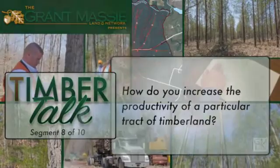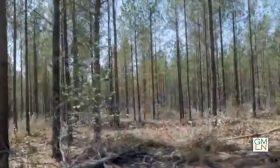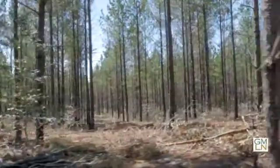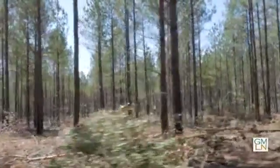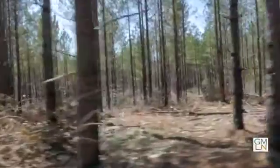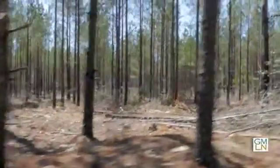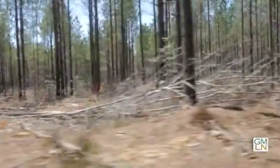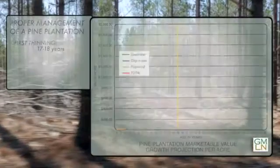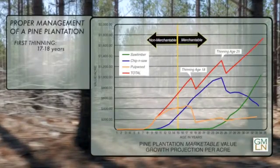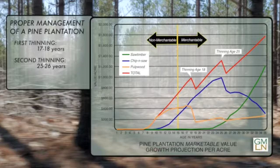How do you increase the productivity of a particular tract of timberland? Doing active management of a stand will really benefit the stand tremendously. From a pine plantation standpoint, doing the intermediate thinning is essential to maximize the economic return. In the pine stands, you want to do your first thinning in the 17- to 18-year-old range, a second one in the 25- to 26-year-old range, and then your final harvest at 35.